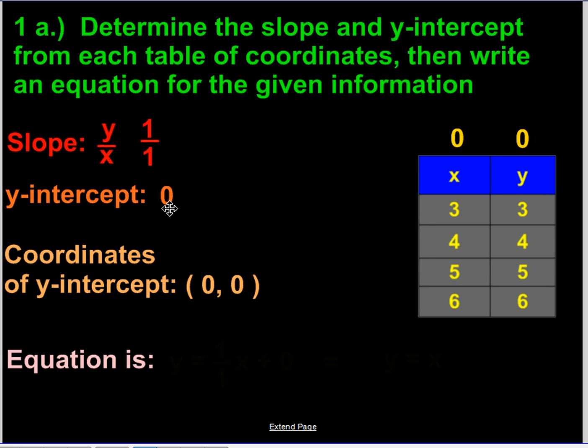We can now take the slope and the y-intercept and put that into the equation. So we have y equals 1 over 1x plus 0. Now we can clean this up a little bit because technically we don't have to have it over 1 next to the x.